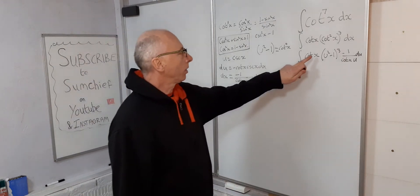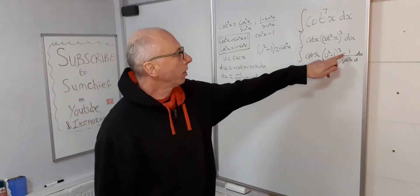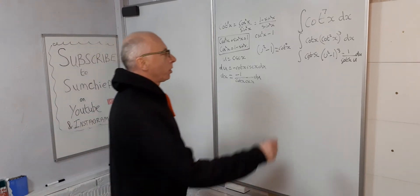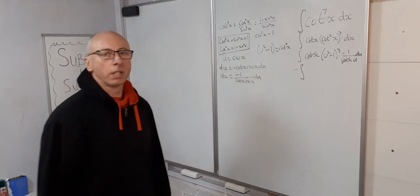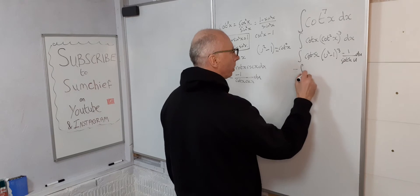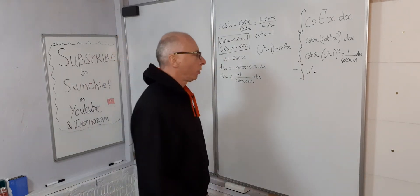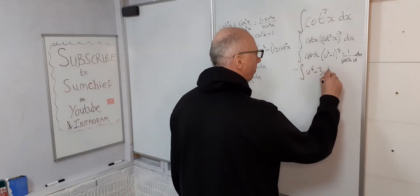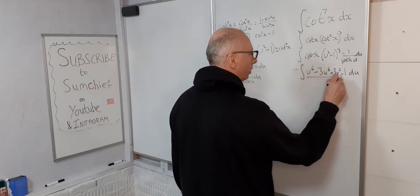The cot(x) and csc(x) terms cancel out, leaving us with minus 1 over u du. Moving the minus out front, we expand (u² - 1)³ to get u⁶ - 3u⁴ + 3u² - 1. Don't forget we're still dividing by u, so we split all the fractions: minus integral of (u⁵ - 3u³ + 3u - 1/u) du.